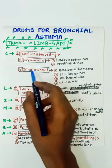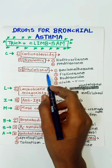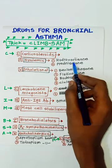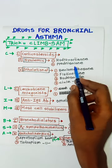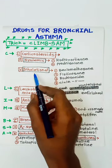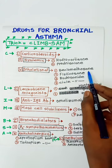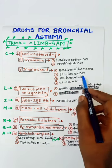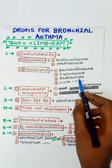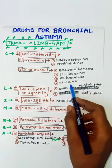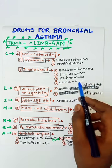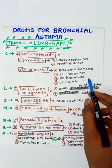In corticosteroids we have systemic and inhalational. In systemic: hydrocortisone and prednisolone. In inhalational: beclomethasone, fluticasone, budesonide, and ciclesonide. These are easy to remember.